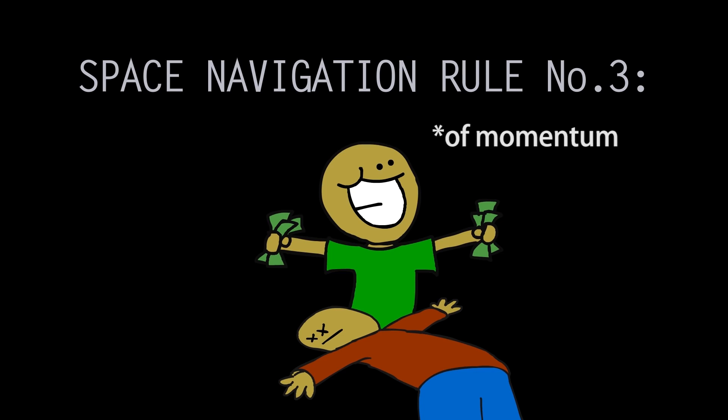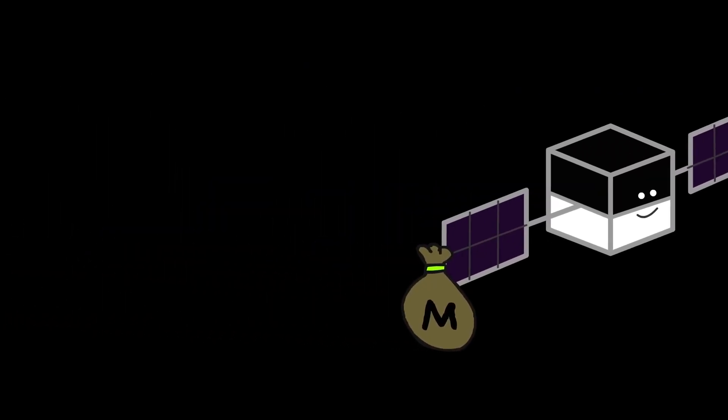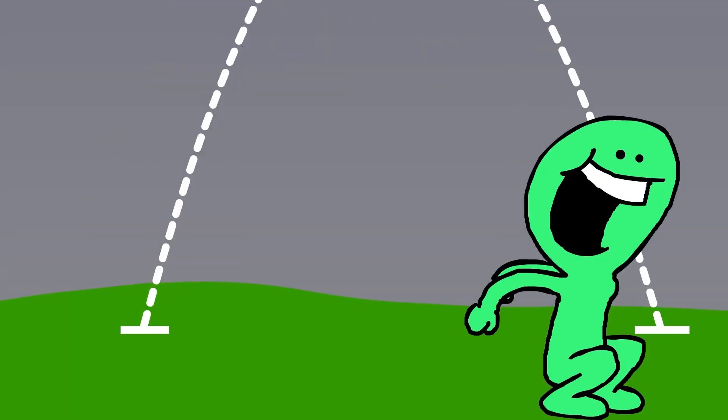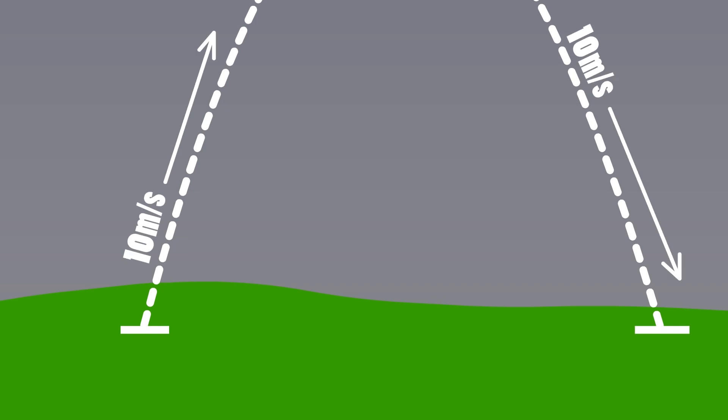Space navigation rule number three. Loot bodies. That's right, you can literally steal momentum from other bodies in space. Here's the Moon, it's orbiting Earth, which we are going to leave. How can the Moon help us? Let's start with the simple idea behind gravity. What goes up must come down. If something goes up at a certain speed, it will come back down at that exact speed at the initial launch altitude.